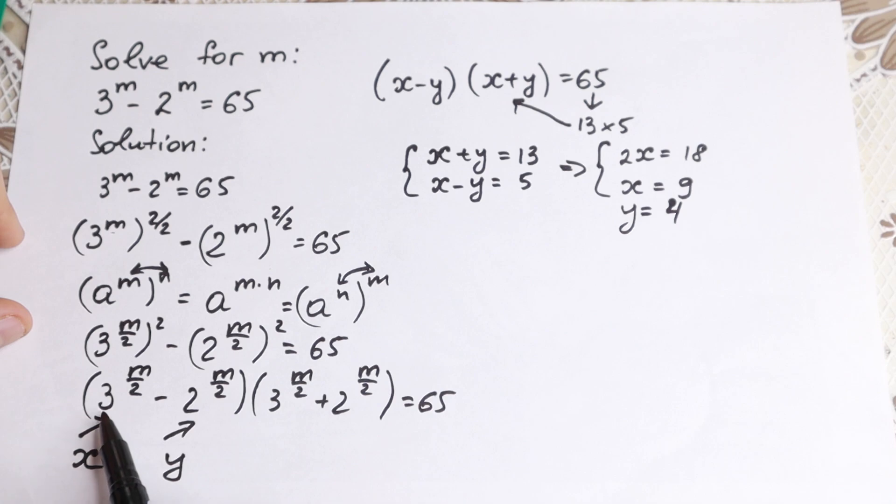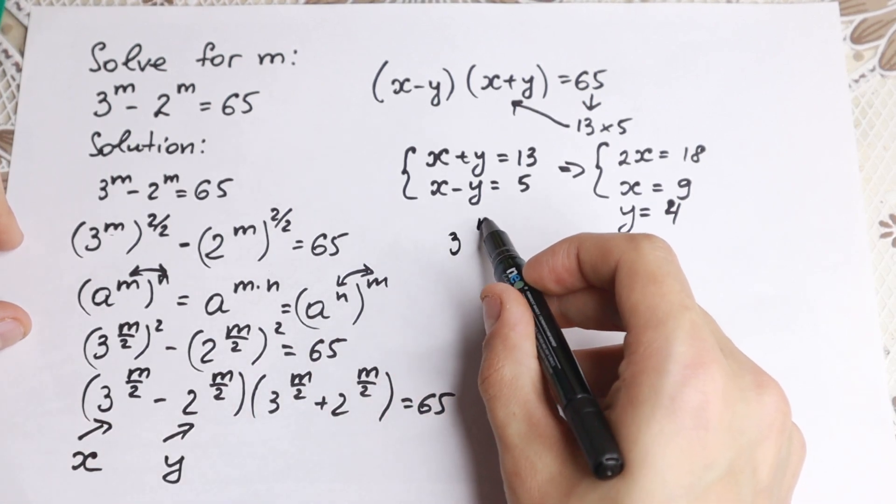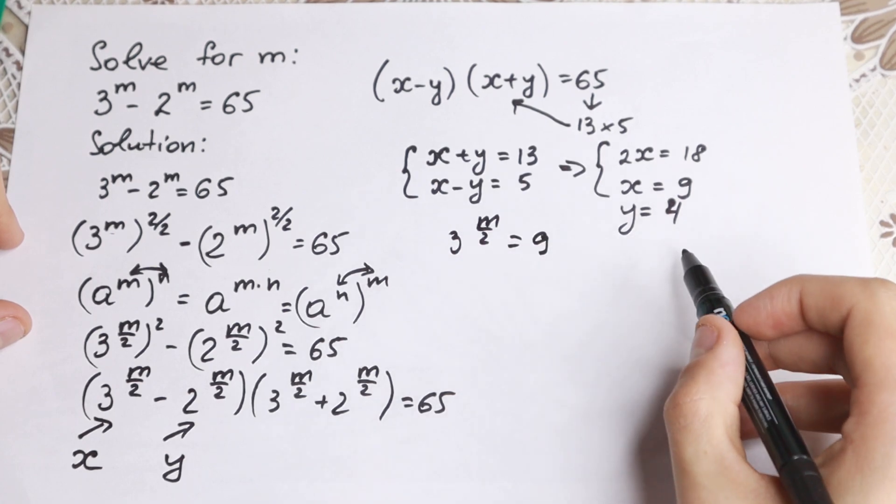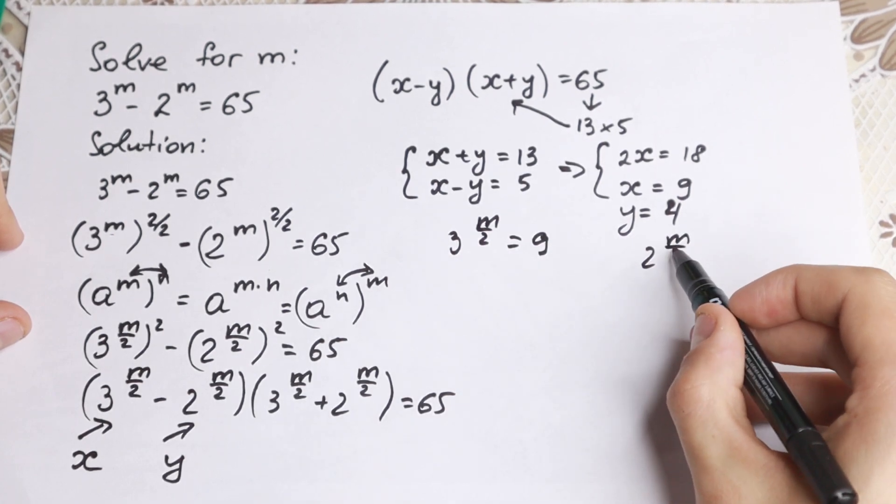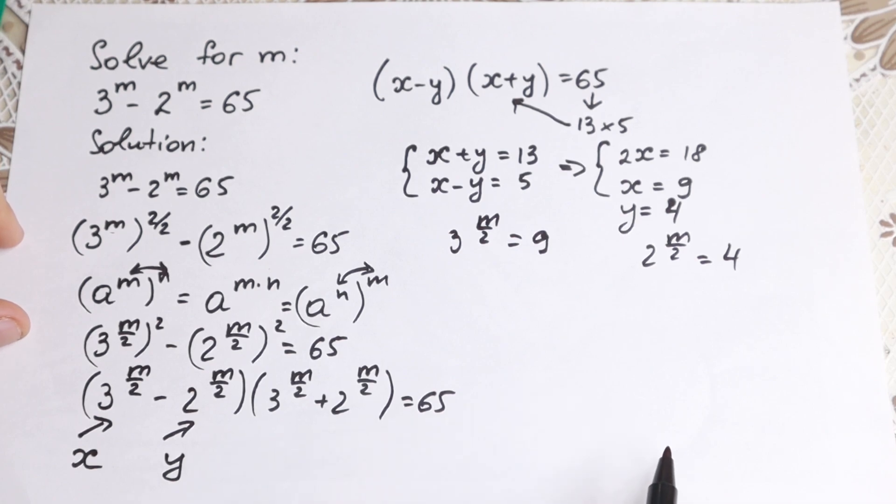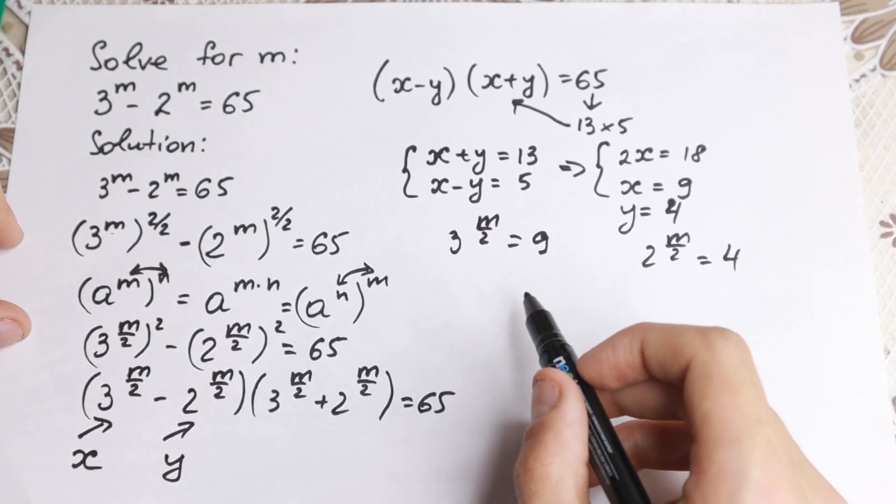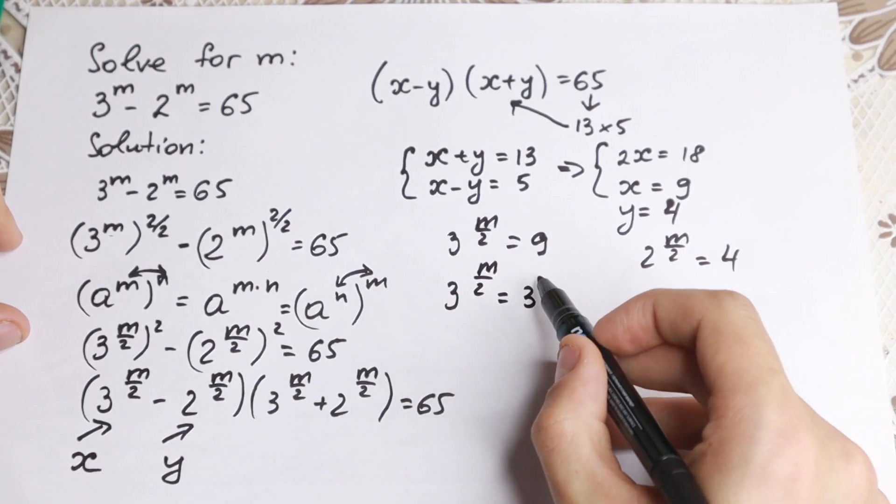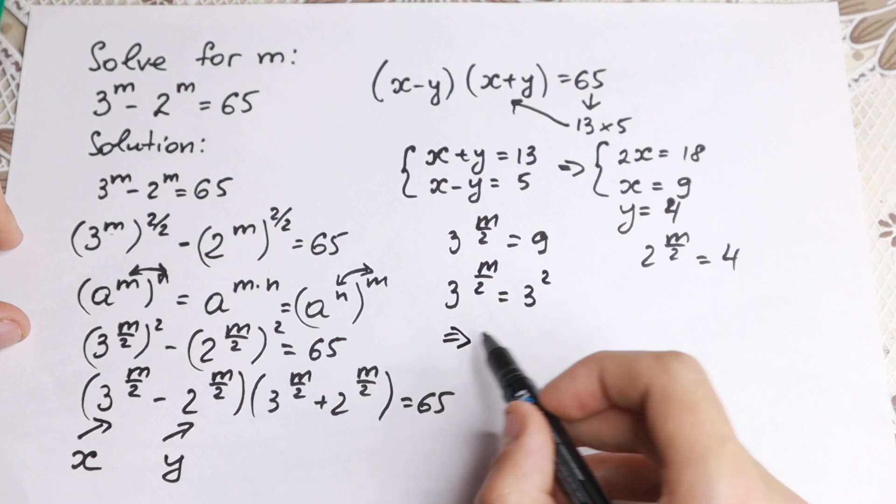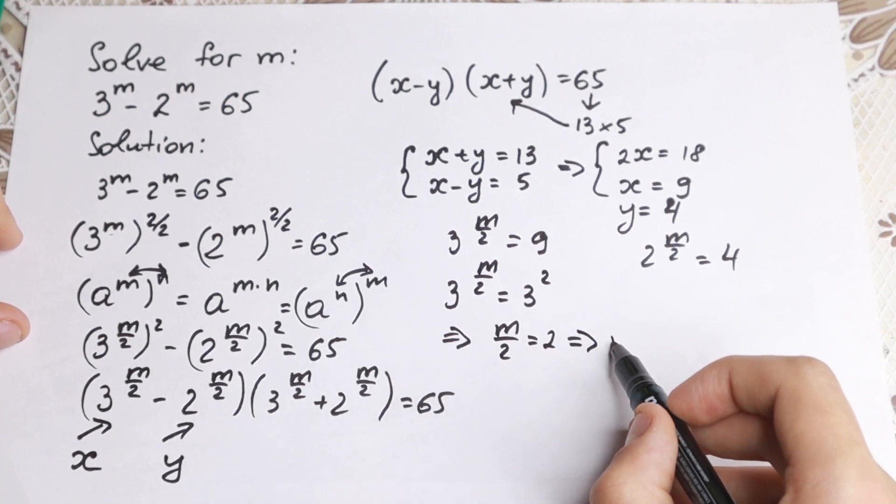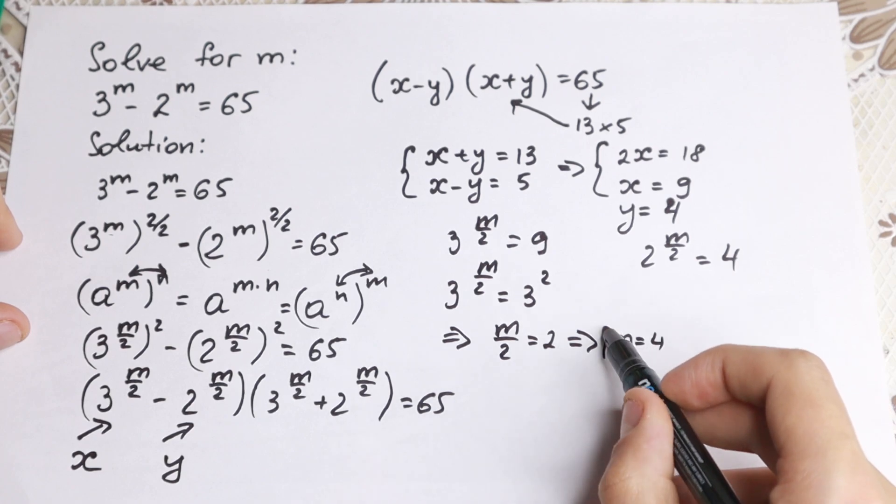What we're going to do next? We have a substitution. 3 to the power m over 2 equal to x equal to 9, and 2 to the power m over 2 equal to 4. Two equations. We can solve it easily without any troubles. We have 3 to the power m over 2 equal to 3 squared, and we'll have m over 2 equal to 2 and from here m equal to 4.